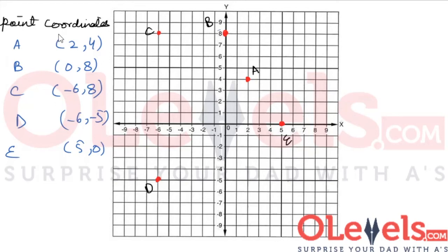We have found the position, or the coordinates, of each of the five points plotted on this graph. By now you should have a pretty solid understanding of how we can use coordinates to represent the position of points. We had a bunch of points and we were able to figure out what their coordinates were.